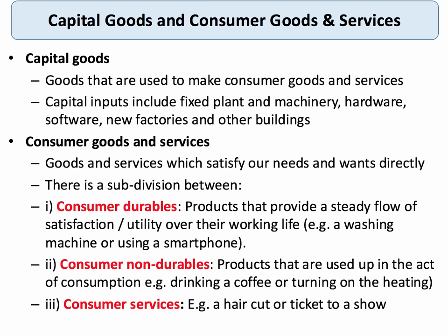Consumer durables provide us with a flow of utility, a flow of satisfaction over their working life — a washing machine, a television, a smartphone, a cooker for example.